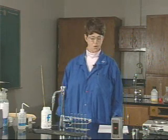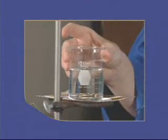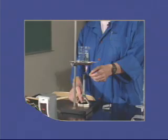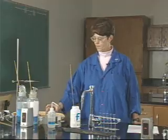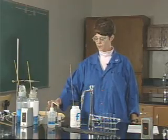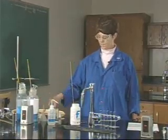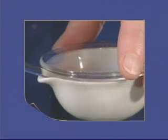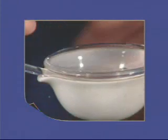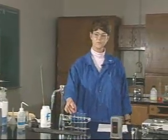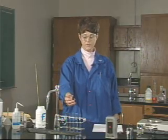The equipment that you'll be using today is all familiar to you. You will be using a balance, a ring stand, a ring, a wire gauze, a Bunsen burner, filter paper — nine centimeter — a beaker of 150 milliliters, a funnel, tongs, an evaporating dish, a watch glass, a small stirring rod, test tubes, a test tube rack, and stoppers that are an appropriate size to fit inside the test tubes.